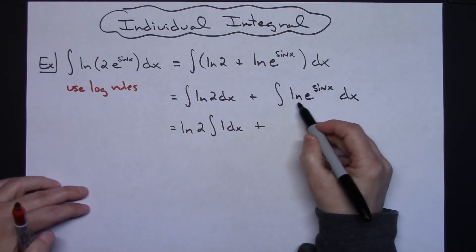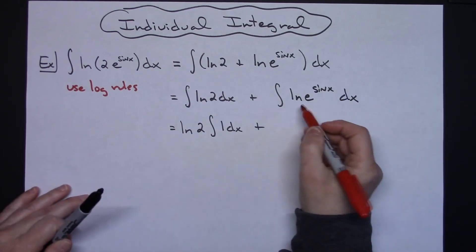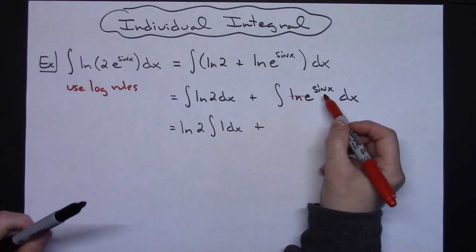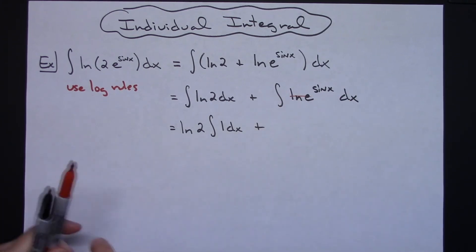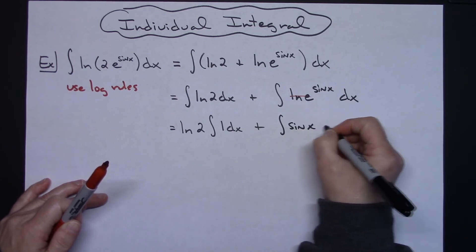Now we're going to take a look at this. Natural log of e raised to the sine x can be simplified. Natural log of e is just 1, so we're going to be left with just sine x there. So the integral of sine x dx.